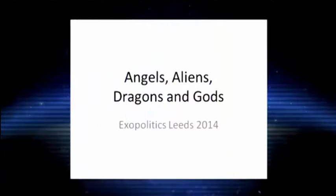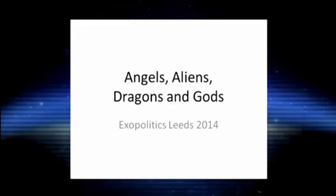Today's lecture is divided into four sections. The title of the lecture is Angels, Aliens, Dragons, and Gods. I'm going to be arguing that the etymology suggests, in terms of linguistics, that the angels are one and the same thing with the phenomenon of the aliens. I can prove this, and I will be demonstrating this today when we deconstruct the words for the terms of angels and aliens.